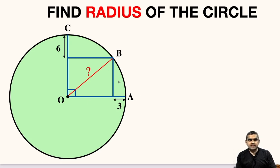So here we need to find the radius of this given circle. Let us name these two points, this point as M and this point as N. Now the distance between N to A is given as 3 units and from M to C is given as 6 units.